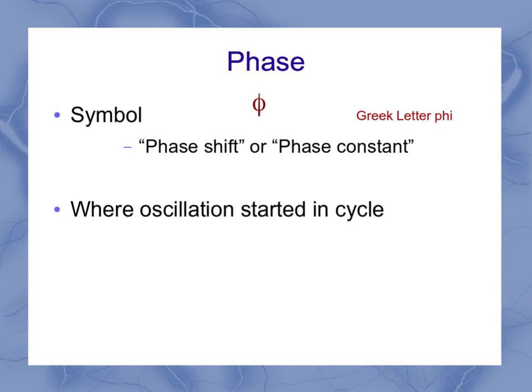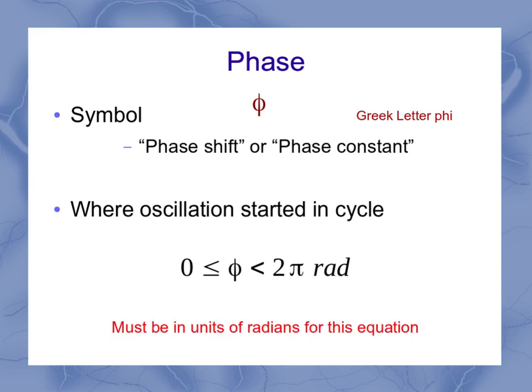And it's a measure of where the oscillation started in the cycle. So it can range between 0 and 2π radians. And it has to be in units of radians for this equation.